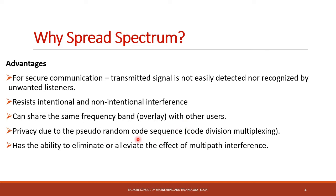Spreading codes used to widen the narrow band data signal are pseudo-random in nature, meaning there is a random sequence of ones and zeros. This is an important aspect in code division multiplexing. Though spread spectrum modulation was initially developed for military applications, nowadays it is widely used in multiple access communication in which a number of independent users share a common channel, and multipath interference can be eliminated using spread spectrum techniques.